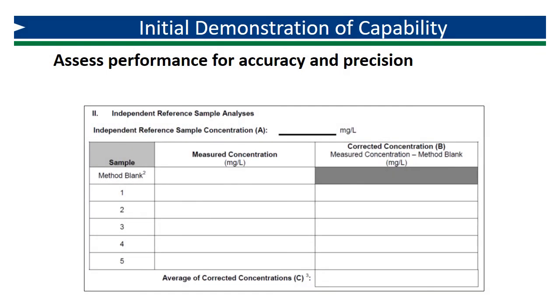The final step is to assess your data for accuracy and precision. This is accomplished through a series of calculations. The record-keeping form walks you through all of the calculations.